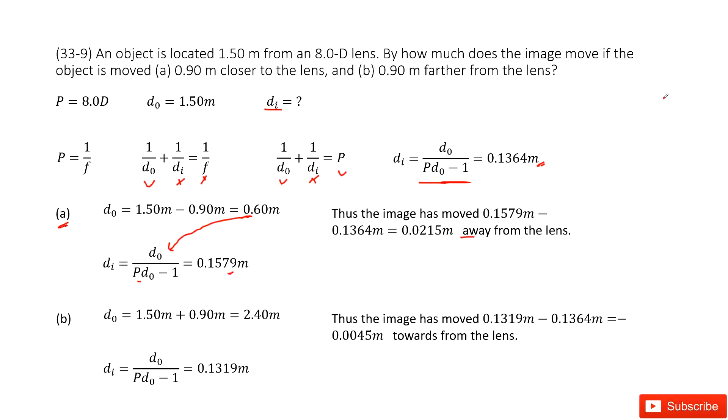Very similarly, if the object is moved 0.9 meter farther from the lens. For this part b, we can write down the object distance as 1.5 meter plus 0.9 meter, it becomes 2.4 meter there.